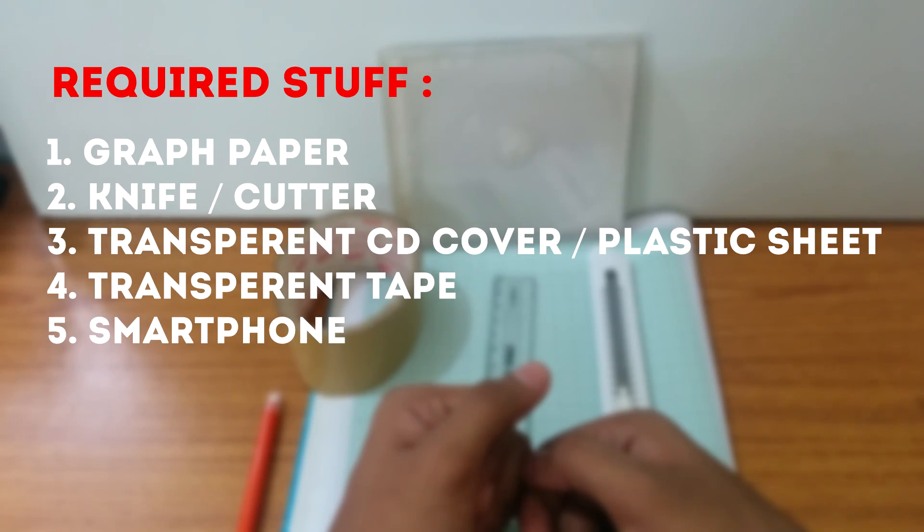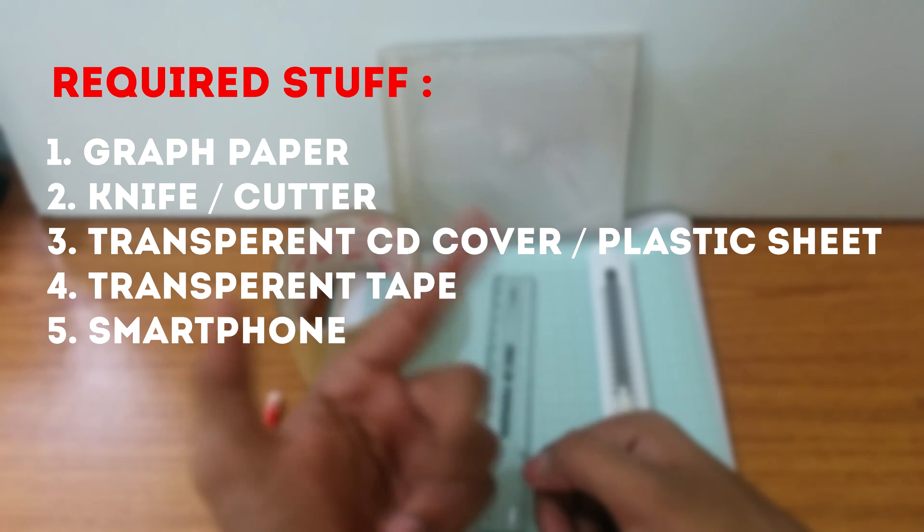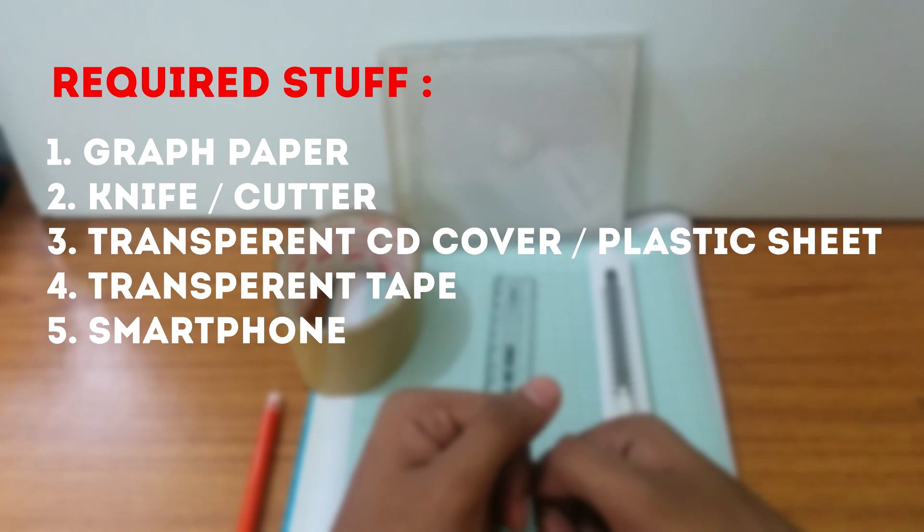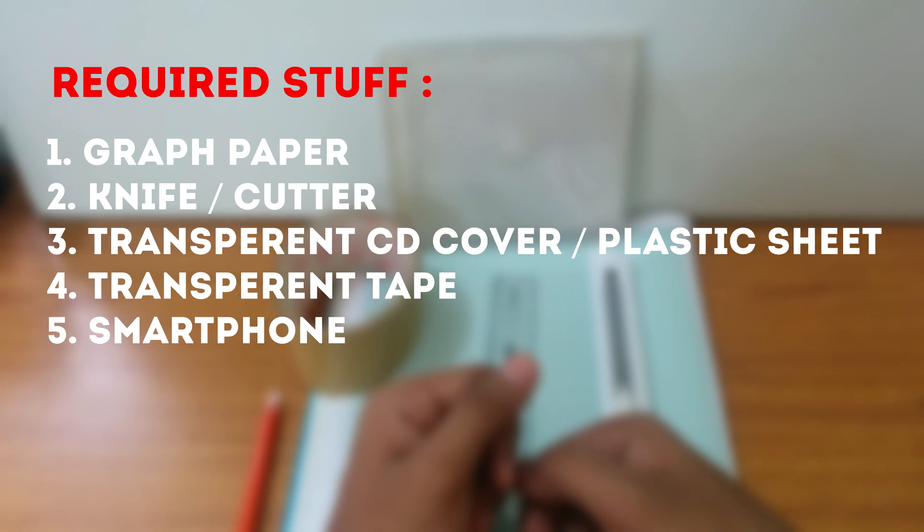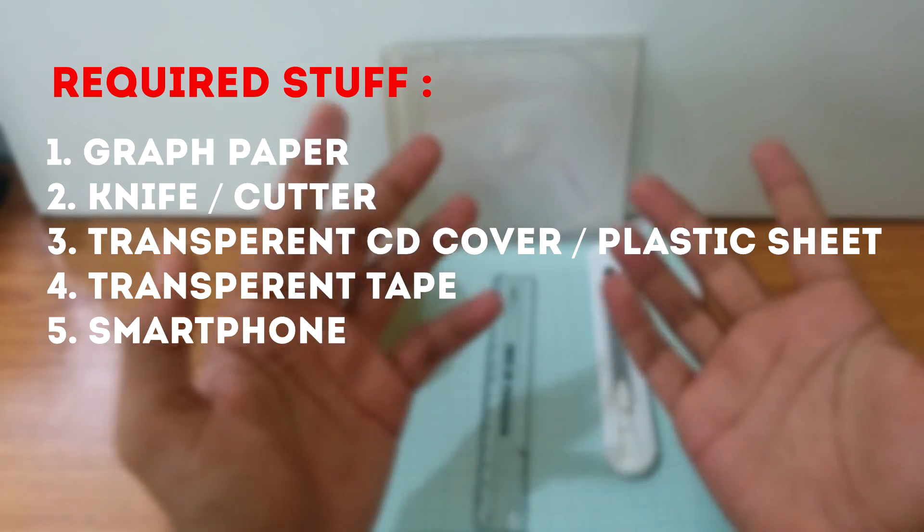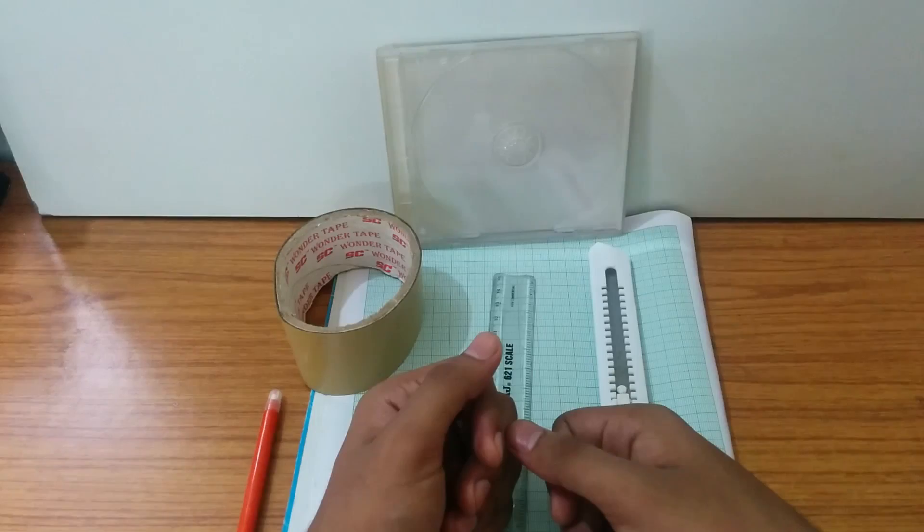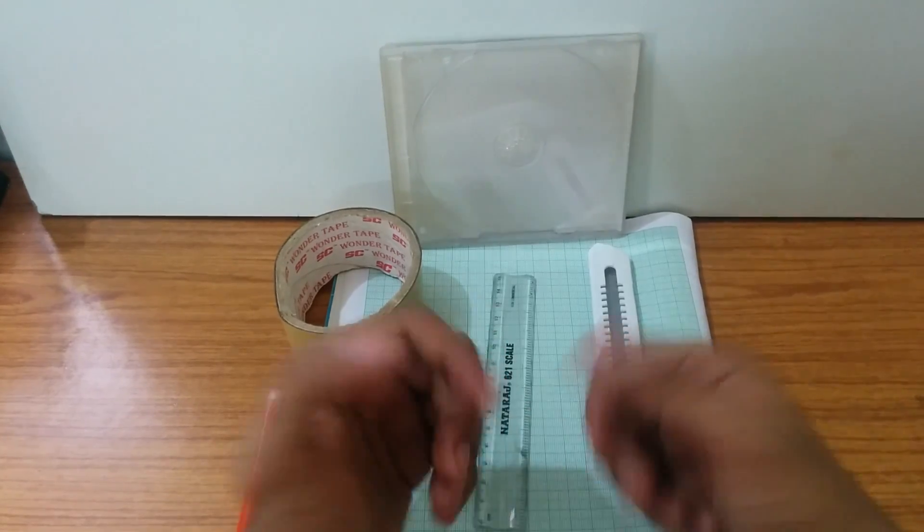So these are the stuff required for building the projector. You must have a graph paper, then a knife or a cutter, then a plastic CD cover or a thin transparent sheet of plastic, a transparent tape and obviously a smartphone.